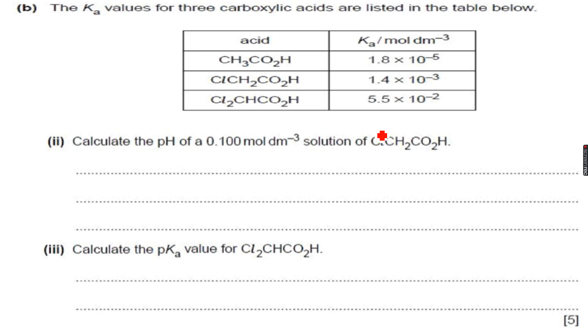So you can go to that playlist on my channel and you can figure out the explanation behind why as the number of chlorine atoms increases the Ka values increase. Why the acid becomes more acidic as the number of chlorine atoms increase.